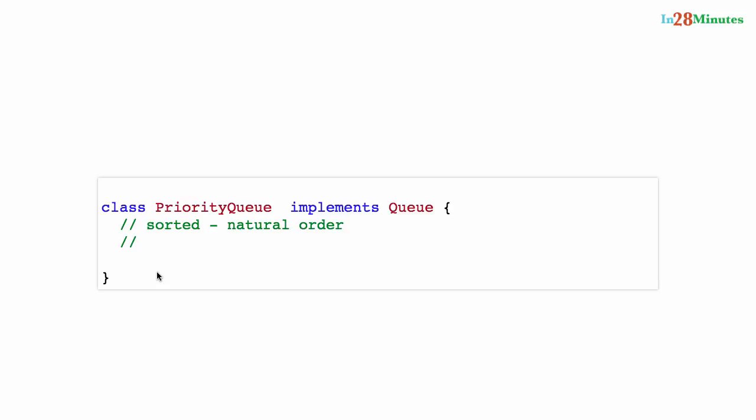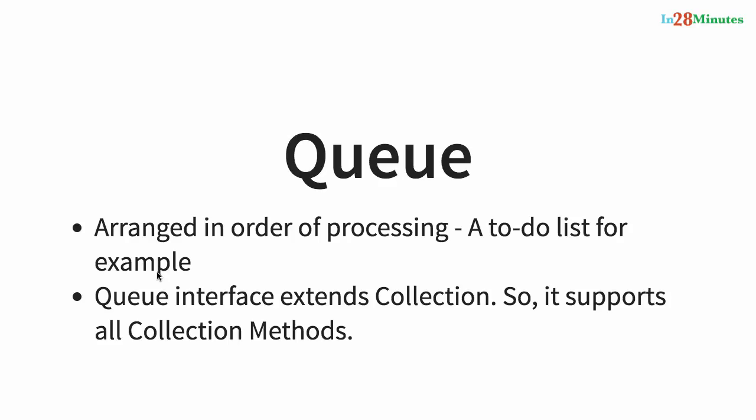In a priority queue, by default elements are stored in sorted natural order — the order in which you would want to process them. However, we'll see later that we can provide custom comparator implementations to change the order. So if you want a specific custom order in which you want elements to be processed, we can do that as well.